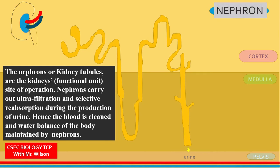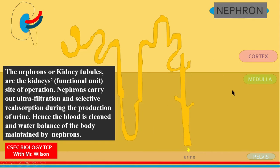The nephrons carry out ultrafiltration and selective reabsorption during the production of urine. Hence, the blood is cleaned and the water balance of the body is maintained by the nephron. The nephron lies between the cortex and the medulla of the kidney and empties urine into the pelvis.